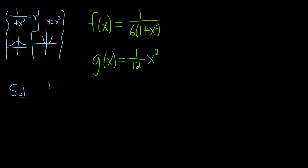So we have 1 over 6 parentheses 1 plus x squared. And that should be equal to, let's go ahead and write this one as x squared over 12. So the reason I did that is so that we can use cross multiplication in the next step.